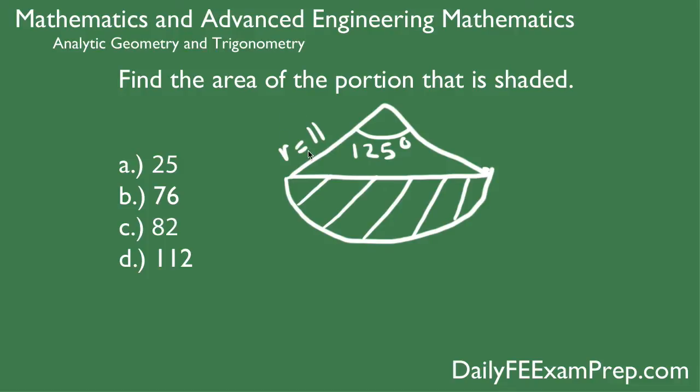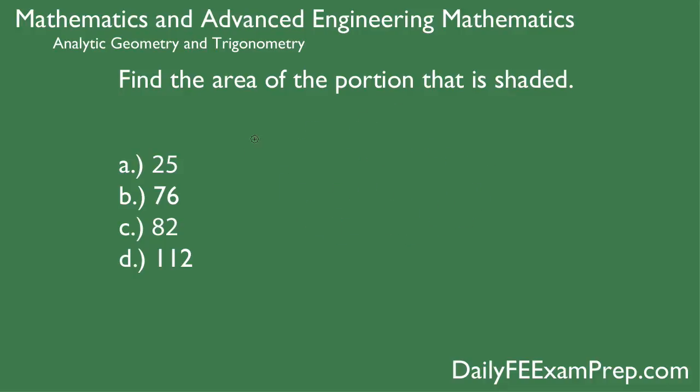Make sure that you write down these givens: r equals 11 and 125 degrees, because we're going to be putting that into the formula right now. Hopefully you have your calculator set up and you've got your givens written down, because what we're going to do right now is convert that degree value into radians.